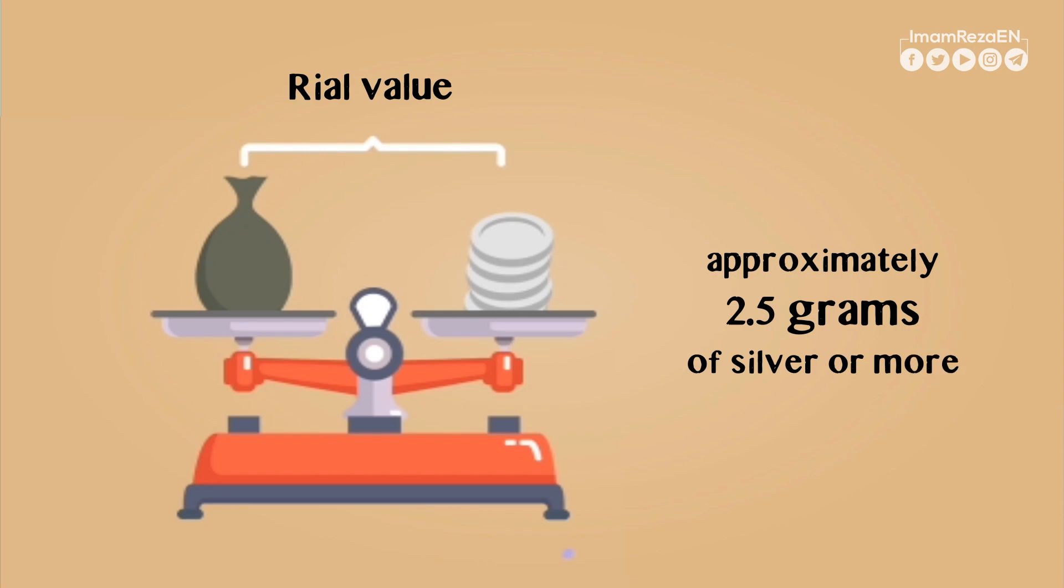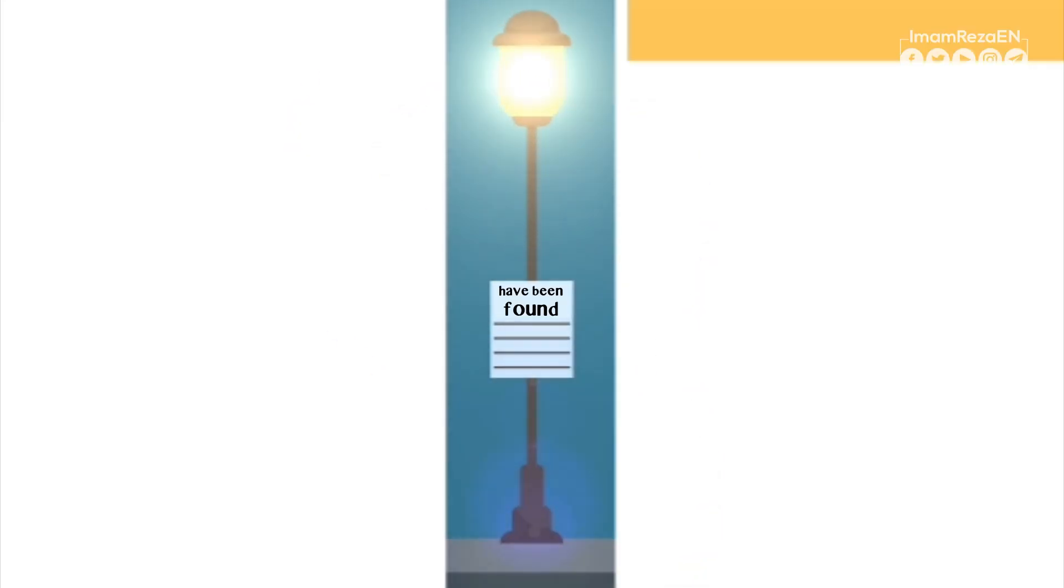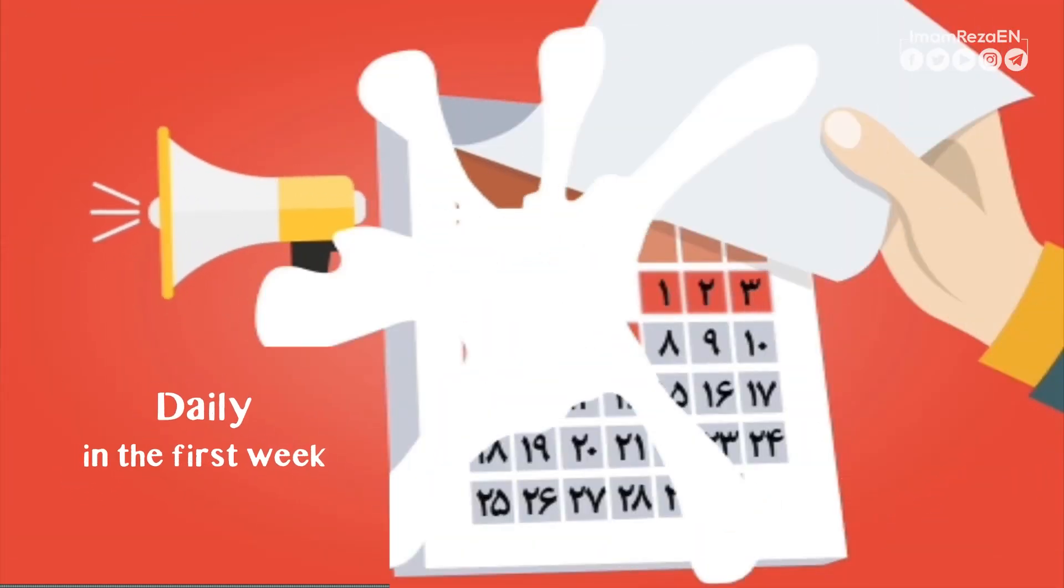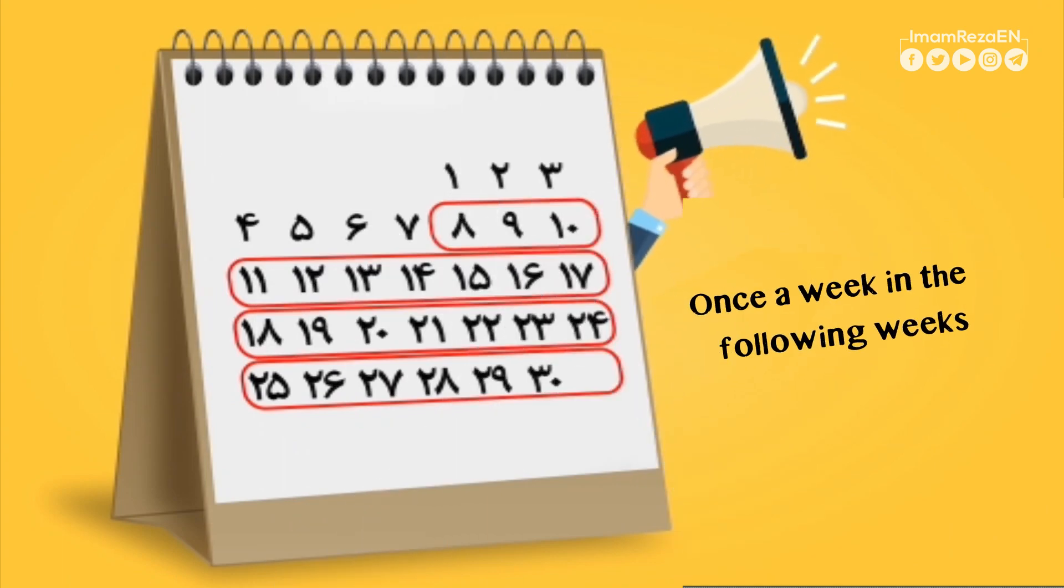You should announce the finding of the property regularly for a year to find the owner. This should be done by announcing daily in the first week and once a week in the following weeks. The announcement should not be neglected.